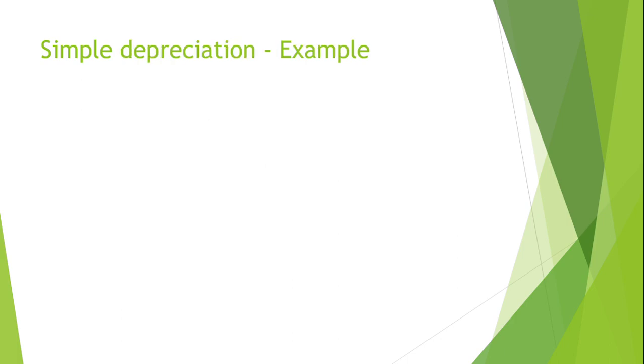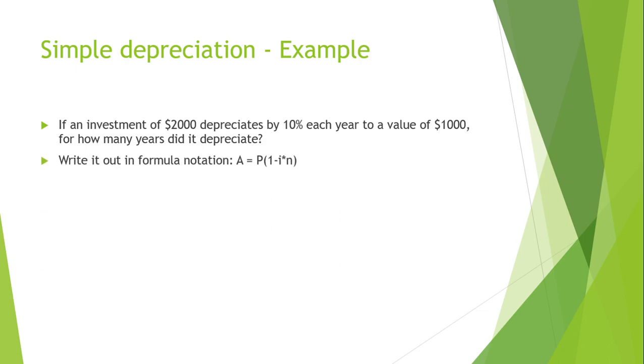Next, we'll look at a simple example of depreciation. If an investment of $2,000 depreciates by 10% each year to a value of $1,000, for how many years did it depreciate? So then, we also just need the formula. Plug in all the relevant values, follow those steps, and then you'll get to N equals 5 years.